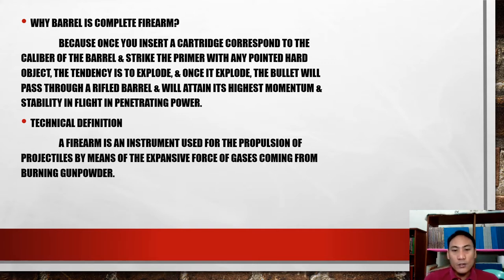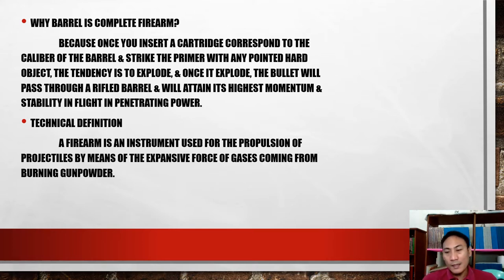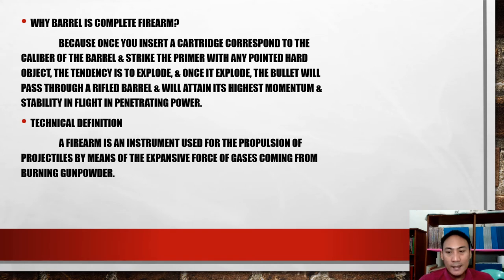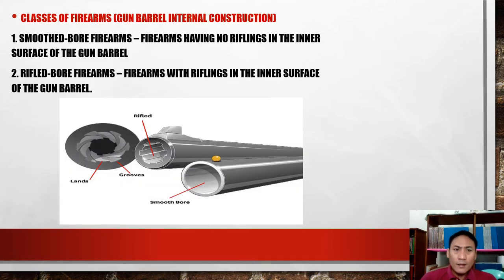The technical definition of a firearm is an instrument used for the propulsion of projectiles by means of the expansive force of gases coming from burning powder. The propellant — gunpowder — when burned, generates heated gas that pushes the projectile out.